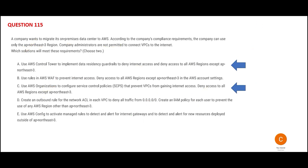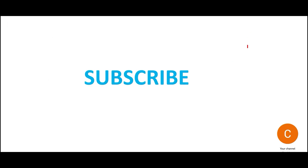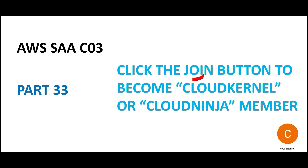So those two answers — Control Tower and Organizations with SCPs — are my final answers. If you have not subscribed, hit subscribe. You can also view some awesome products linked in the channel. Please become a Cloud Kernel or Cloud Ninja member for access to certification content. This brings us to the end of Part 33 — all real certification questions. See you in the next part, which will be for members only.